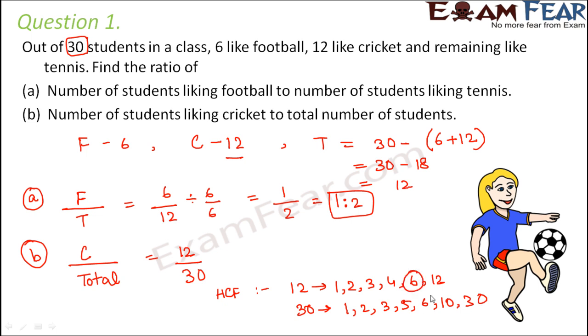So which is the highest common factor? That is 6. So you divide the numerator and the denominator by 6. So you get 2 by 5. So this is 2 is to 5.